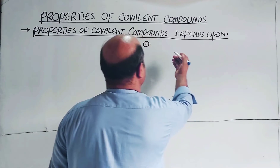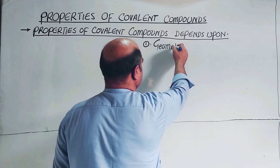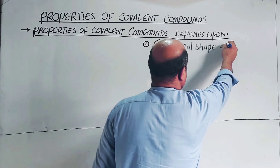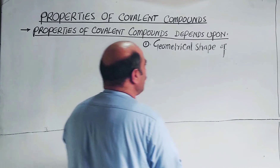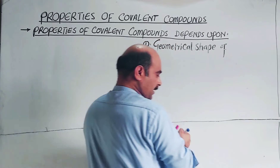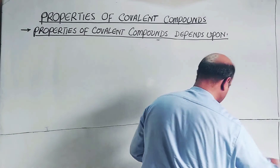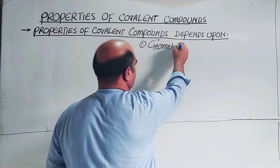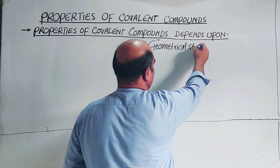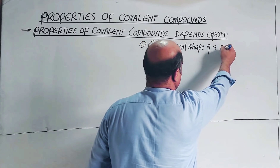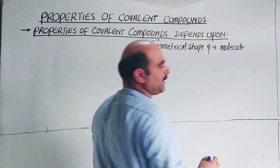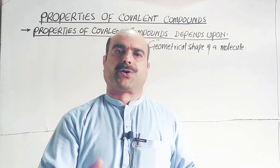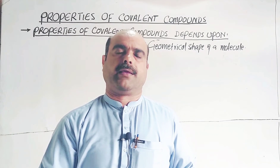The properties of covalent compounds depend upon, first, the geometrical shape of the molecule. The molecule can have different geometrical shapes: linear, trigonal pyramidal, trigonal planar, tetrahedral, pentagonal.